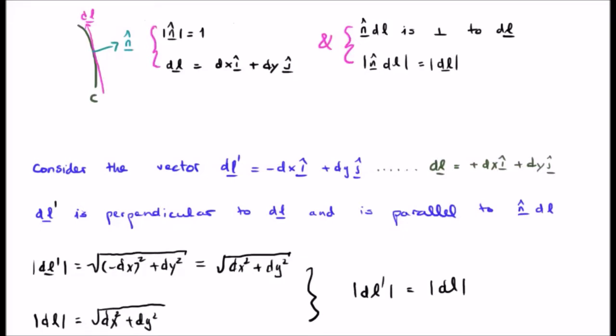This is because by multiplying by N hat we're changing the direction of DL. We're keeping the magnitude the same but changing its direction. Since N hat is perpendicular to DL, N hat DL is perpendicular to DL. Of course the magnitude of N hat DL is going to be the same as the magnitude of DL because the magnitude of N hat is 1.